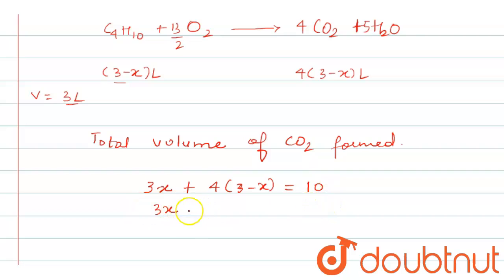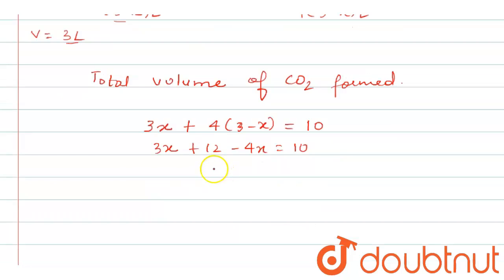On simplification, we will get 3X plus 12 minus 4X is equals to 10. So what will be the value of X? X will be equals to 2.